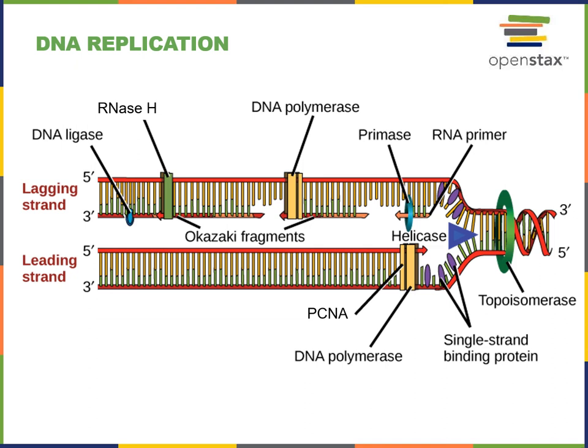However, on the lagging strand, a new RNA primer will have to be formed after helicase opens up a new segment of the DNA. Then DNA polymerase can move in the 5' to 3' direction, adding new DNA nucleotides onto the 3' end of that RNA primer, creating a short fragment known as an Okazaki fragment. During DNA replication of both the lagging strand and the leading strand, the RNA primers will have to be removed and replaced with DNA nucleotides. This process is carried out by an enzyme known as RNase H.